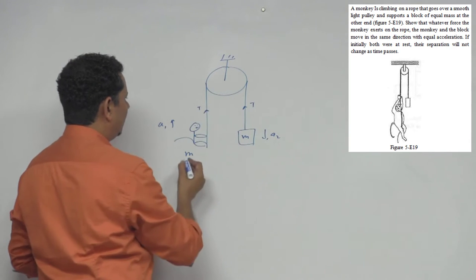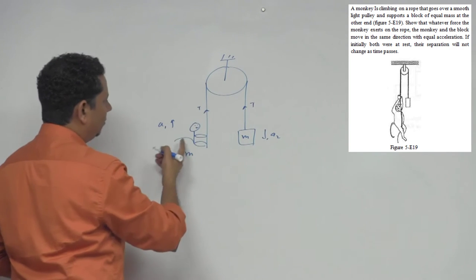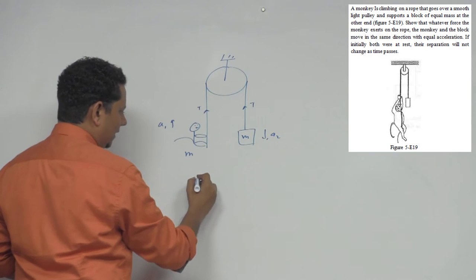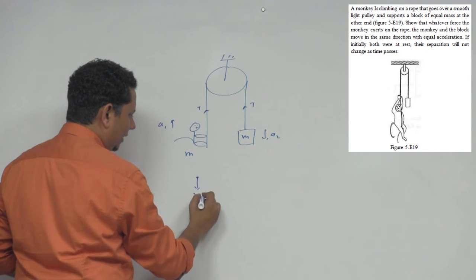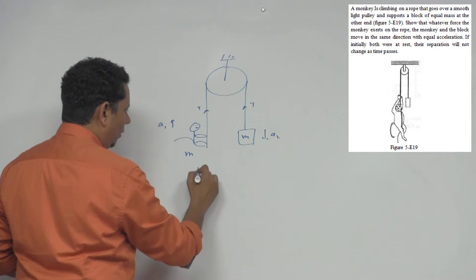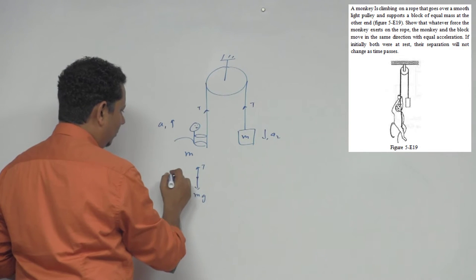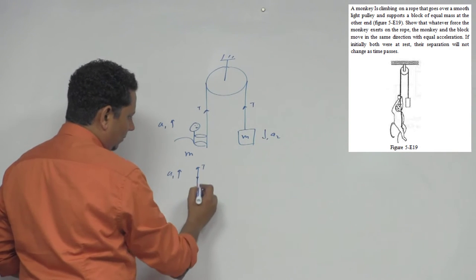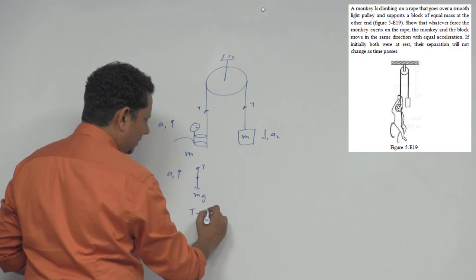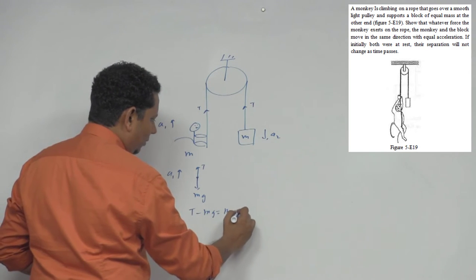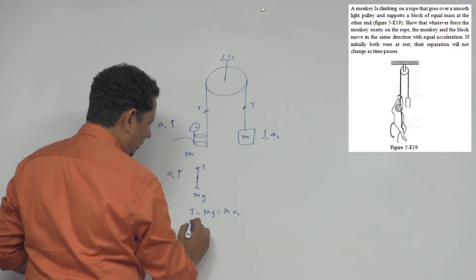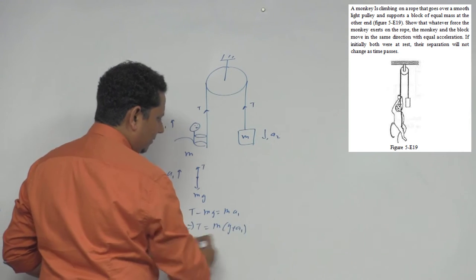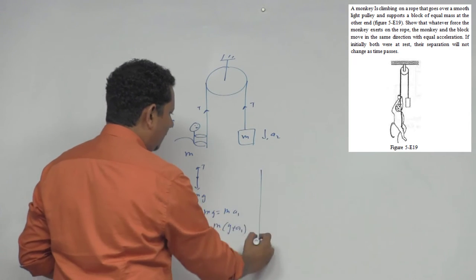Since the rope is inextensible, the tension T will be the same throughout. Drawing the FBD of the monkey: downward force is mg, upward force is tension T, and the monkey is going up with acceleration A1. So the equation becomes: T - Mg = M·A1, which implies T = M(G + A1).